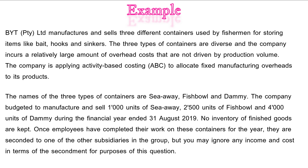The three types of containers are COA, Fishbowl and Dami. The company budgeted to manufacture and sell 1,000 units of COA, 2,500 units of Fishbowl and 4,000 units of Dami during the financial year ended 31 August 2019. No inventory of finished goods are kept. Once employees have completed their work on these containers for the year they are seconded to one of the other subsidiaries in the group, but you may ignore the income and cost in terms of the secondment for purposes of this question.